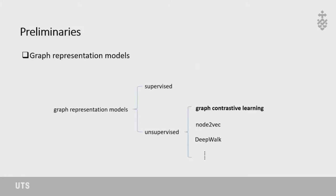Graph representation models can be divided into two categories: supervised or semi-supervised models, and unsupervised models. Supervised models require labels as input, whereas unsupervised models do not. Supervised models usually have better performance due to the extra information in labels. However, in recent years, people have proposed graph contrastive learning, which has become the state-of-the-art unsupervised graph representation model and has even shown competitive performance with supervised models.